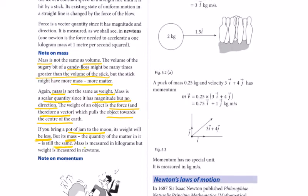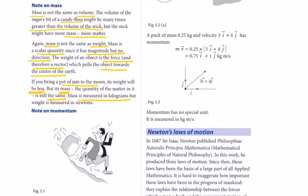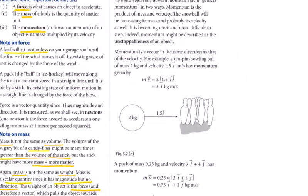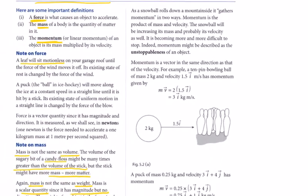Mass is measured in kilograms. Once we start practicing questions, a lot of this becomes clearer. Here's a note on momentum: a snowball is chasing this guy down the hill. As a snowball goes down the hill, it gathers momentum. The formula is momentum equals mass multiplied by velocity.